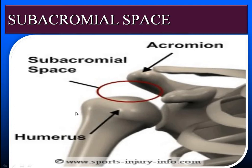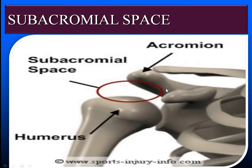Assalamu alaikum, dear students. For today's session we will discuss the sub-acromial space — the space just below the acromion, as well as the space present just above the humeral head. That's why the sub-acromial space is also known as the supra-humeral space. This is the coracoid process, and the junction between this area is known as the coraco-acromial arch. A number of structures — almost six to seven — are present in this space.